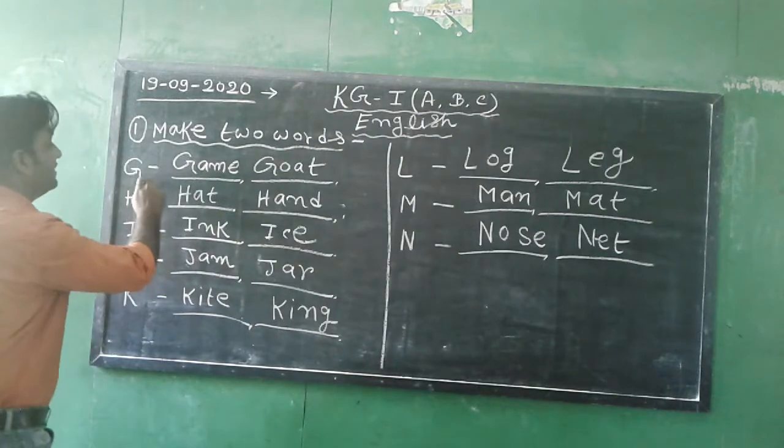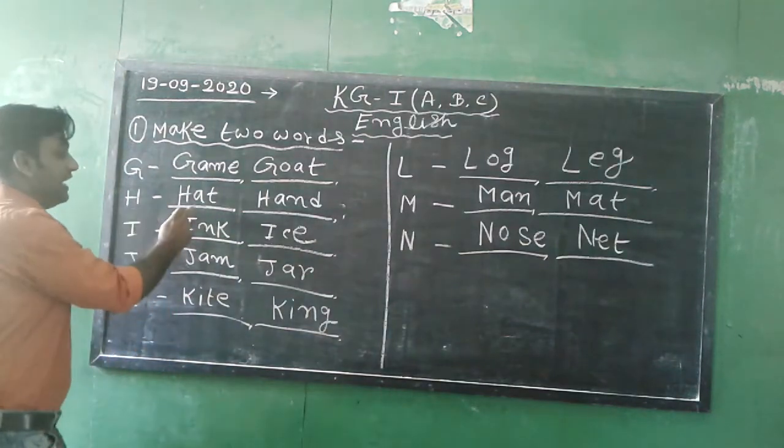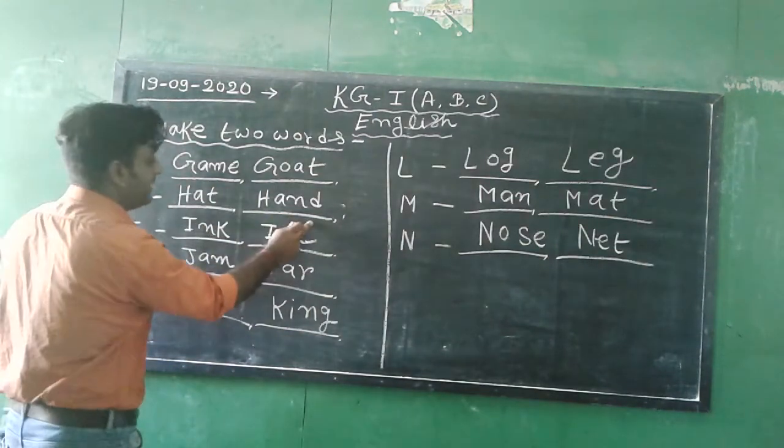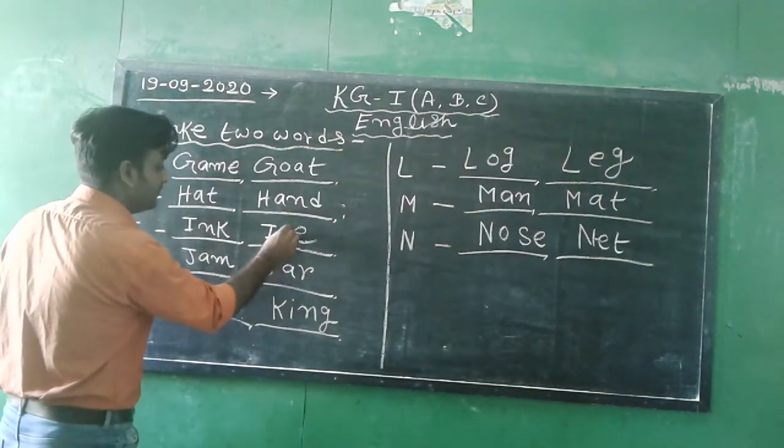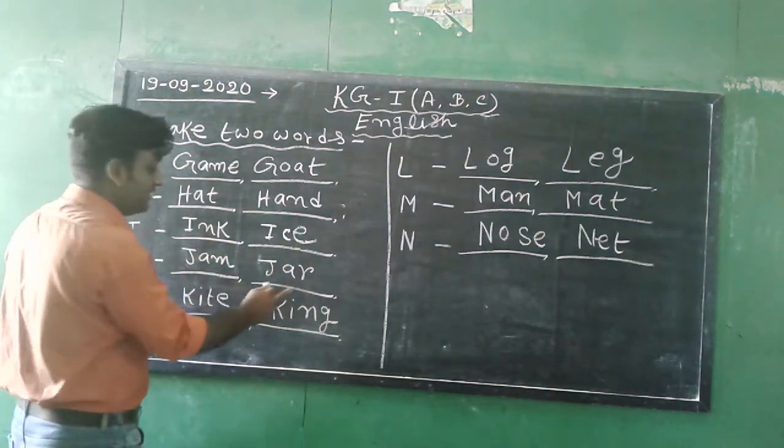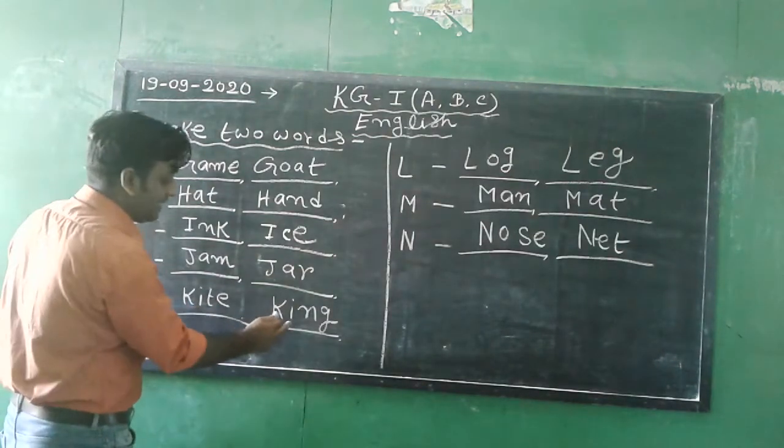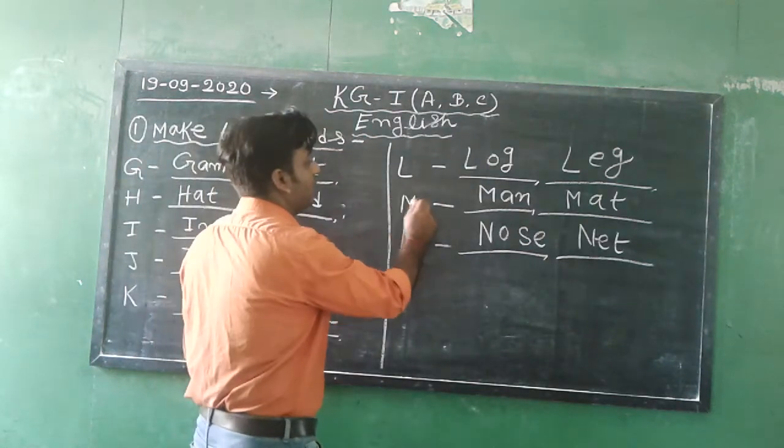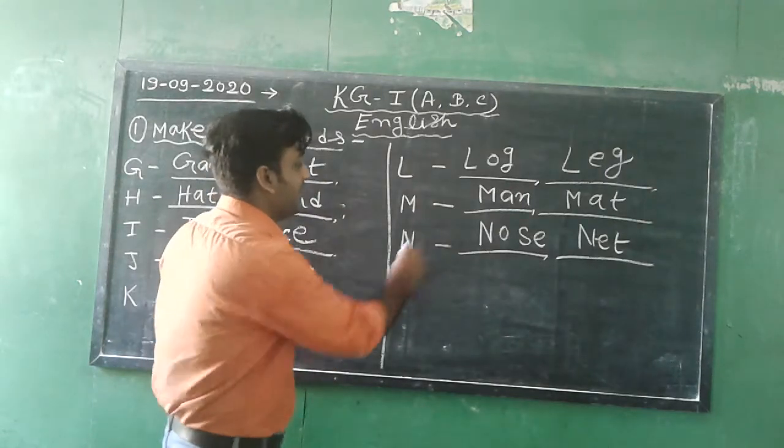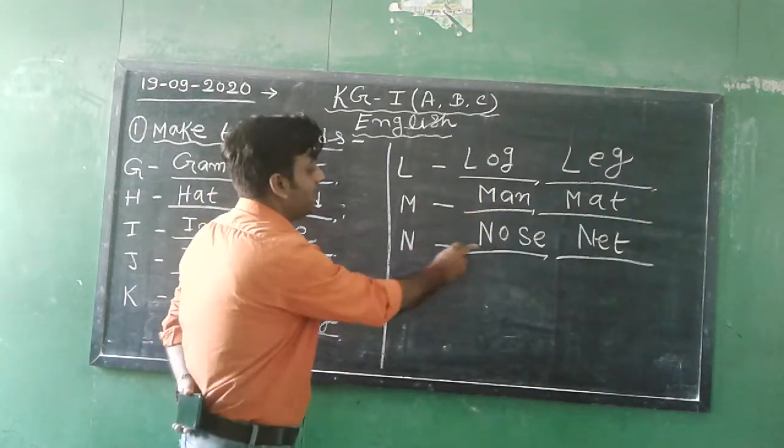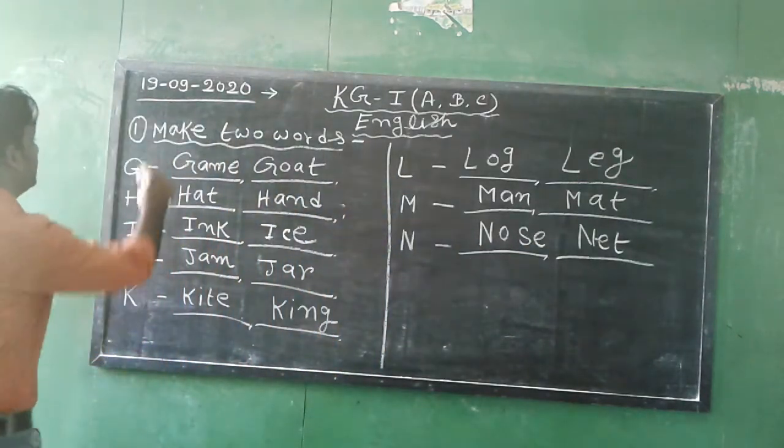Our first topic is make two words. G for game, goat. H for hat, hand. I for in, ice. J for jam, jar. K for kite, king. L for log, leg. M for man, map. N for nose, neck. This is our first topic. Let's come to the next topic.